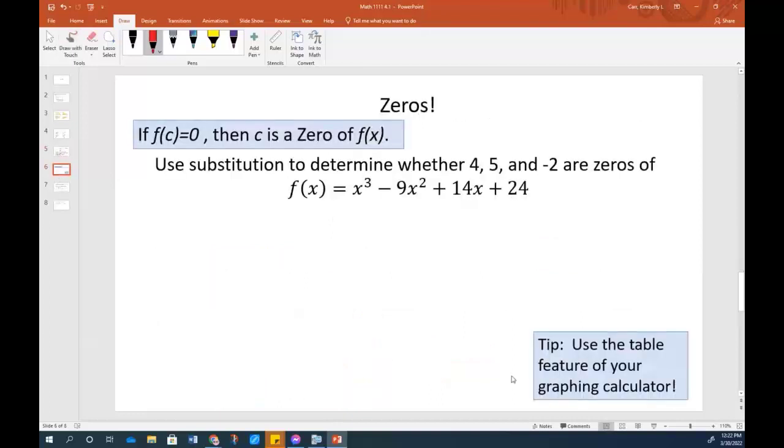The next thing within this lesson is about zeros. If a function is equal to zero for a particular value, then that value is called a zero. And the easiest way to find this is use the table feature of your calculator. Because anytime you need to plug in multiple numbers, the table feature is generally the way to go.